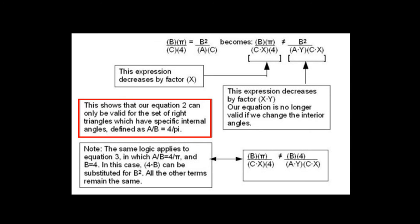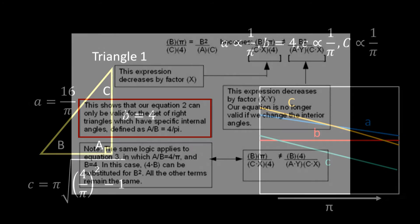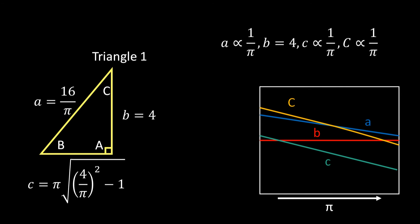Of course the angles do change if you change the value of π. With respect to Triangle 1, if you let the value of π increase, the length of the hypotenuse and the short side both decrease in length and the smaller acute angle also decreases.